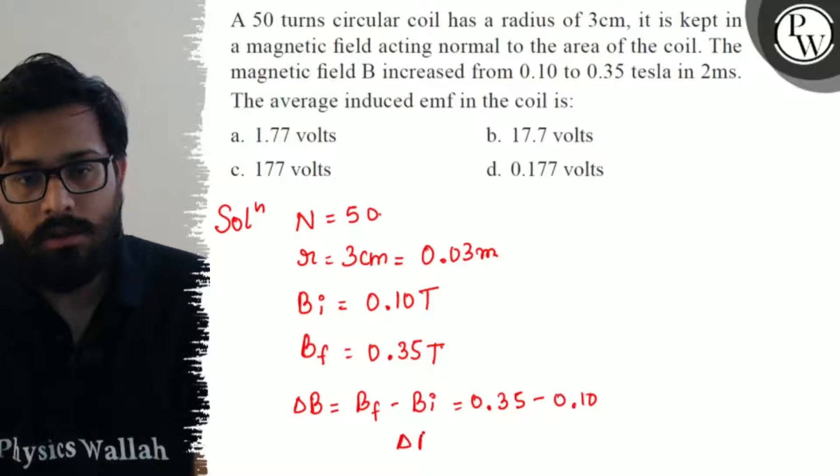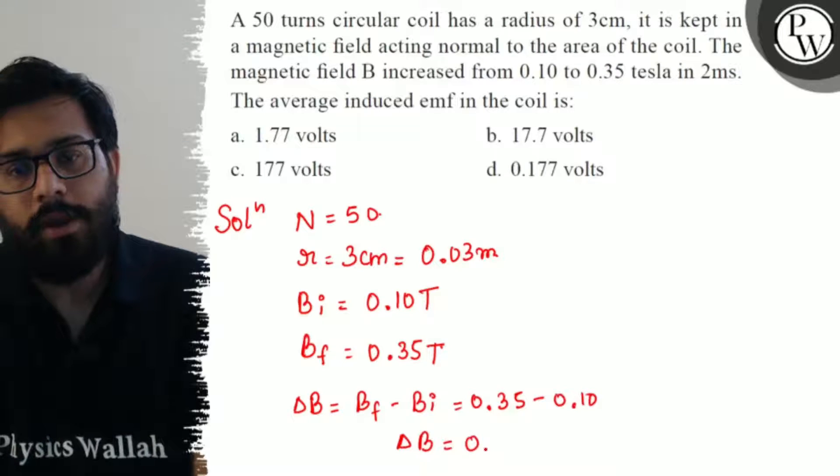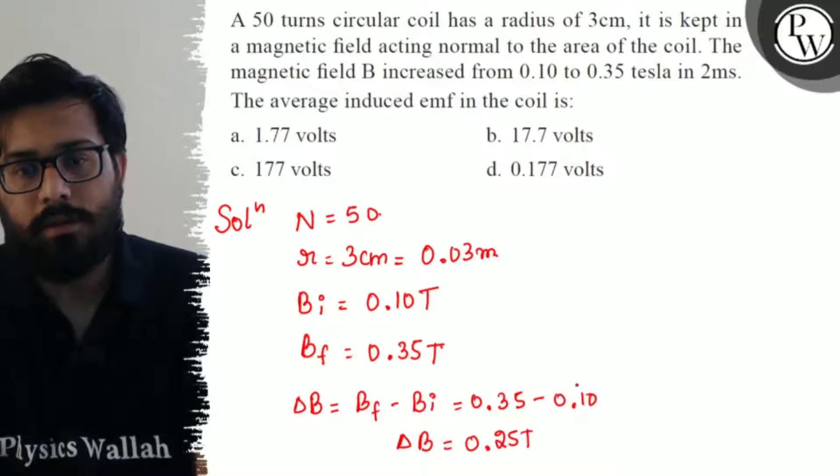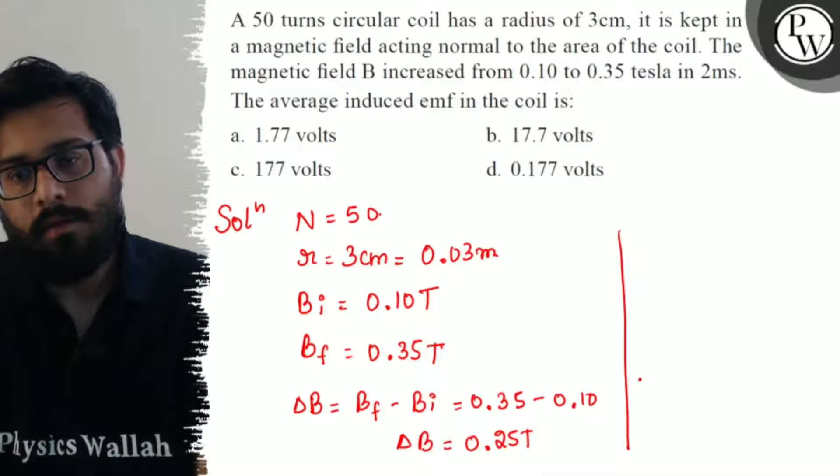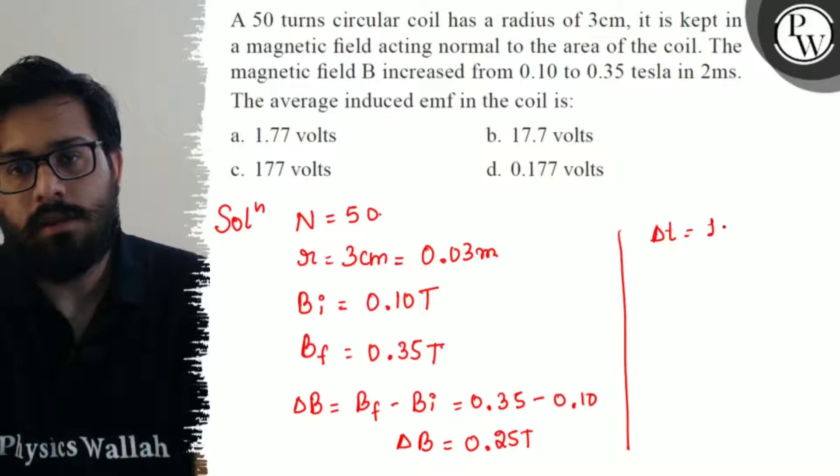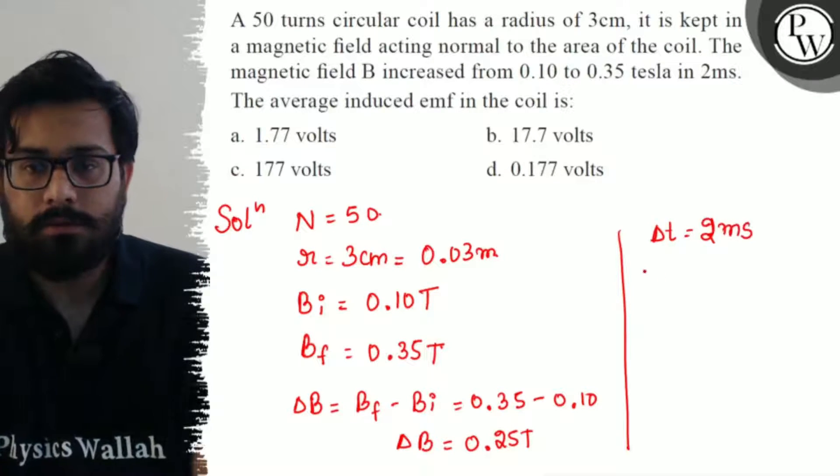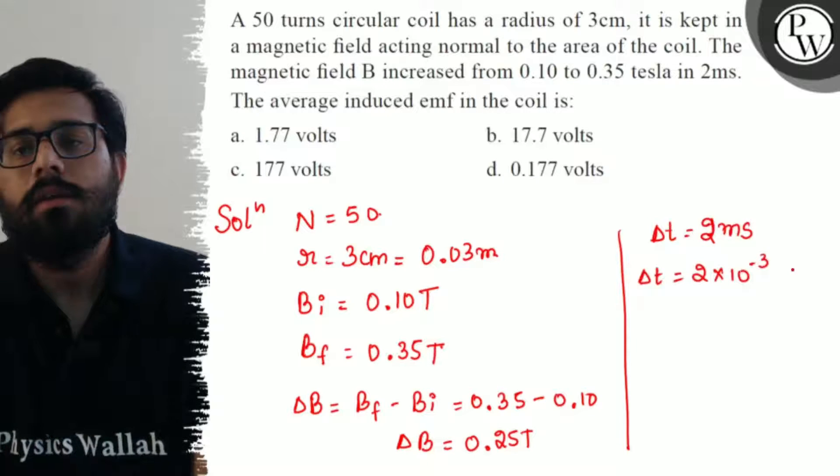Delta B comes out to be 0.25 tesla. Then we have the time interval delta T as 2 milliseconds, which can be written as 2 times 10 to the power minus 3 seconds.